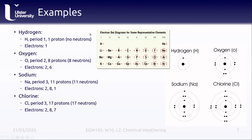We can also represent the elements as a dot diagram, where we place a dot around the chemical symbol for each of the electrons that occupy the valence shell of the atom, going up to eight valence electrons. The furthest right column of the periodic table — known as the noble gases — have a full complement of electrons in their valence shell, so they do not react with other elements.